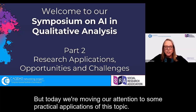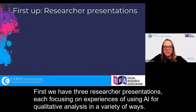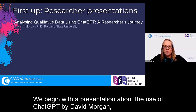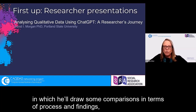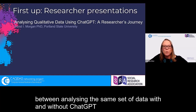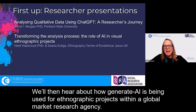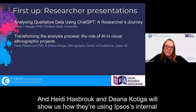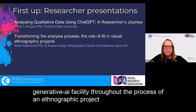Today we're moving our attention to some practical applications of this topic. First, we have three researcher presentations, each focusing on experiences of using AI for qualitative analysis in a variety of ways. We begin with a presentation about the use of ChatGPT by David Morgan, in which he'll draw some comparisons in terms of process and findings between analysing the same set of data with and without ChatGPT.